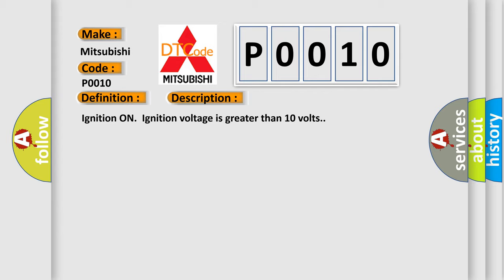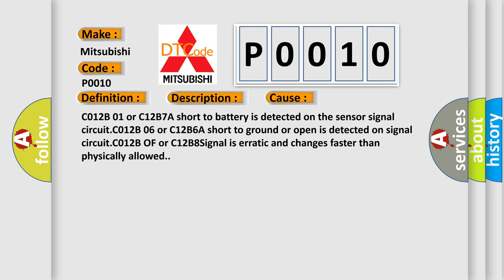This diagnostic error occurs most often in these cases: C012B01 or C12B7A short to battery is detected on the sensor signal circuit. C012B06 or C12B6A short to ground or open is detected on signal circuit. C012B or C12B8 signal is erratic and changes faster than physically allowed.